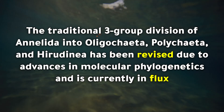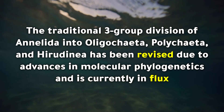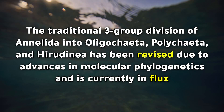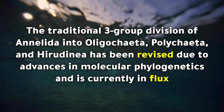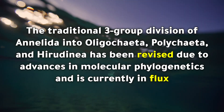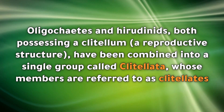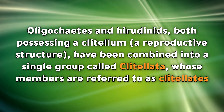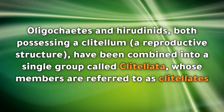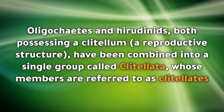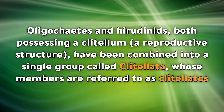The traditional three-group division of Annelida into Oligochaeta, Polychaeta, and Hirudinea has been revised due to advances in molecular phylogenetics and is currently in flux. Oligochaetes and hirudinids — both possessing a clitellum — have been combined into a single group called Clitellata, whose members are referred to as clitellates.